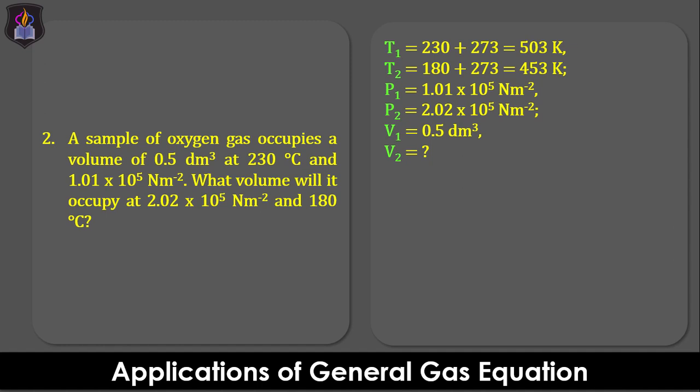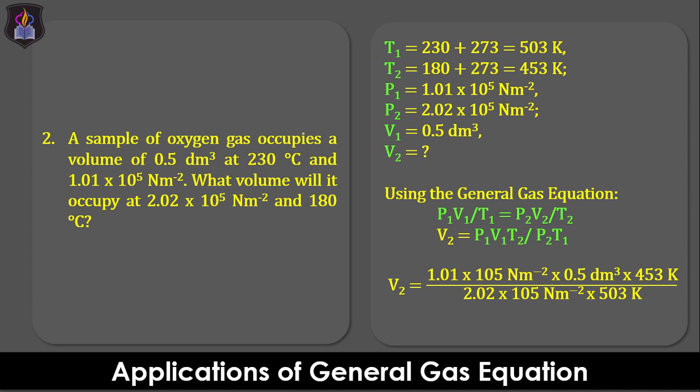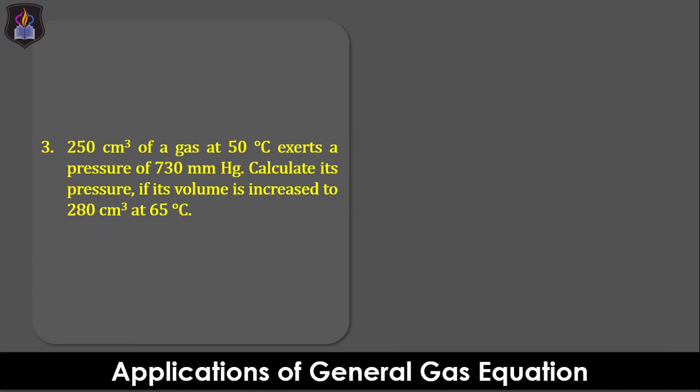Being a PVT relationship, we'll apply the general gas equation: P1V1 over T1 equals P2V2 over T2. Make V2 the subject of the formula and evaluate the equation to obtain 0.2 dm³ as the final volume of the gas.